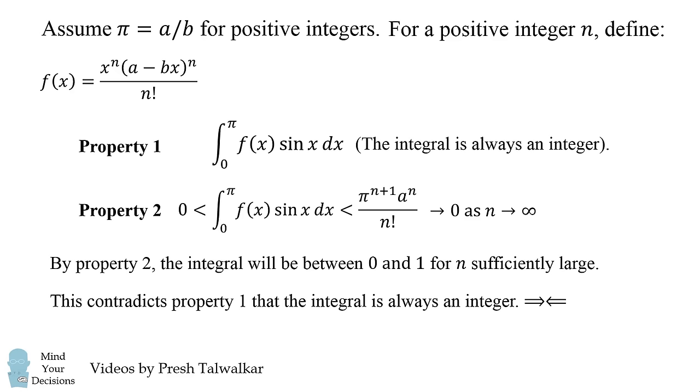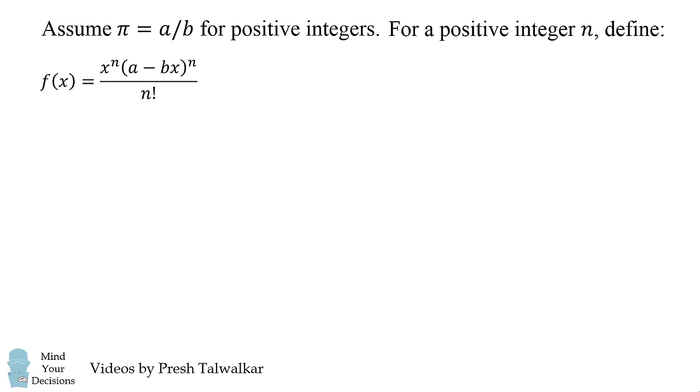So let's go over a little more detail. We first assume that pi is equal to a/b for positive integers. We then define a family of functions depending on a positive integer n as follows. f(x) is equal to x^n multiplied by (a - bx) all raised to the power of n all over n factorial.